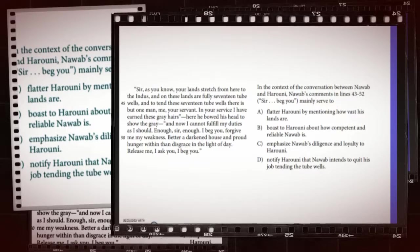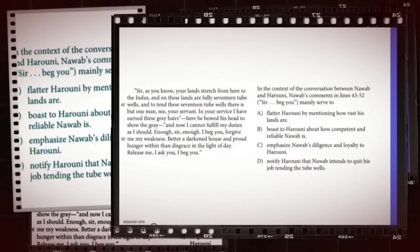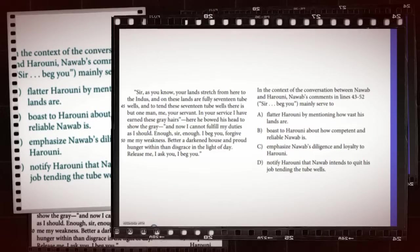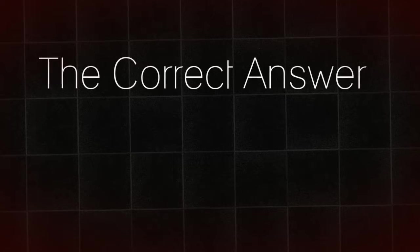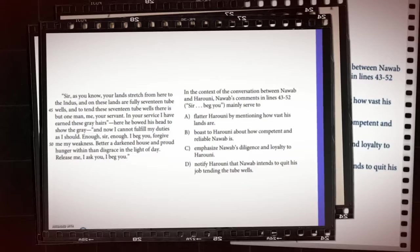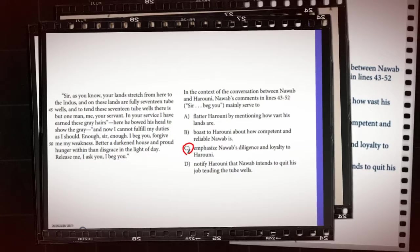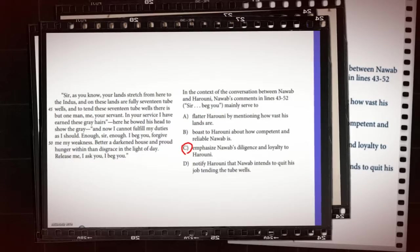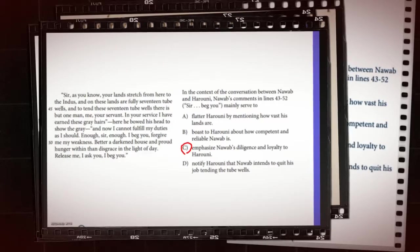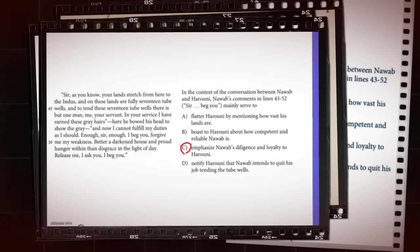Can you read the lines here in 43 through 52 and understand what Nawab is trying to convey with his words? In the context of the conversation, Nawab's comments mainly serve to, answer C, emphasize Nawab's diligence and loyalty to Harouni. We know this because as we look through, we can see that he says there is but one man, me, your servant.